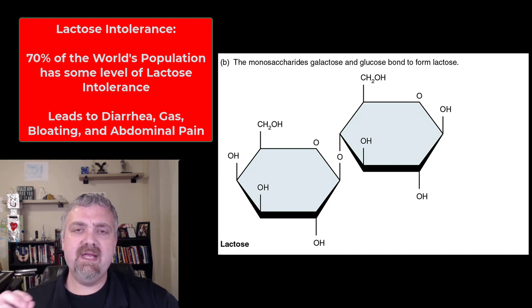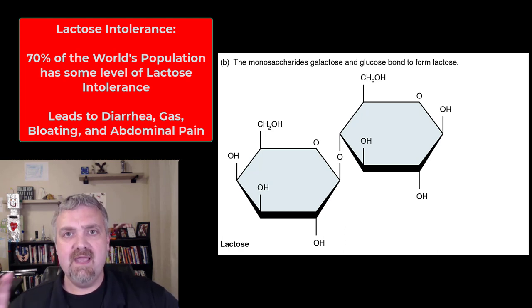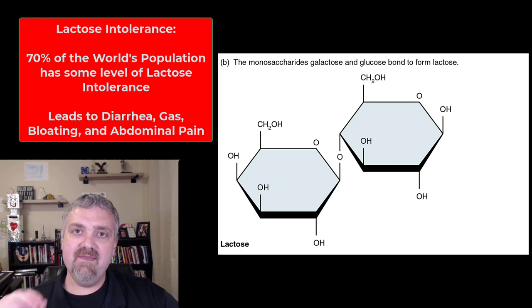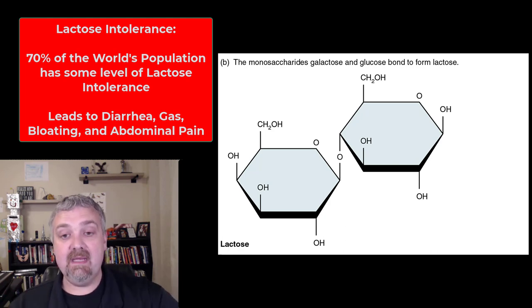So what is lactose intolerance? If you can't break this down properly, then it passes into your large intestine and that can draw some water with it, which is where the diarrhea comes from. And then the microbes living in your gut can start to break this down. They produce gas and organic acids and that leads to the abdominal distension, bloating, gas, pain, and diarrhea that comes from lactose intolerance.